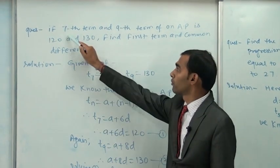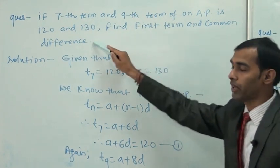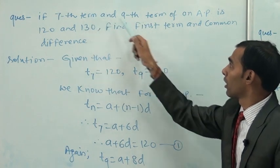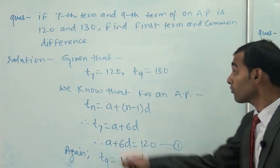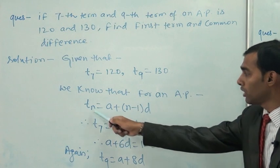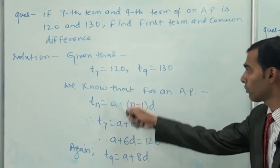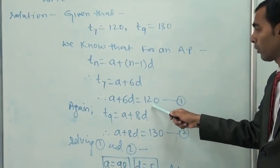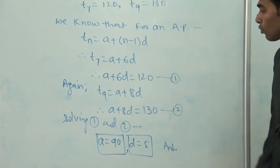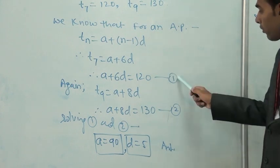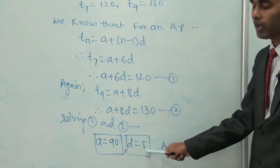Next question: If the 7th term and 9th term of an arithmetic progression are 120 and 130 respectively, find the first term and common difference. Given: t7 = 120 and t9 = 130. Using tn = a + (n-1)d: t7 = a + 6d = 120 and t9 = a + 8d = 130. On solving these two equations, we get a = 90 and d = 5. So the first term is 90 and common difference is 5.